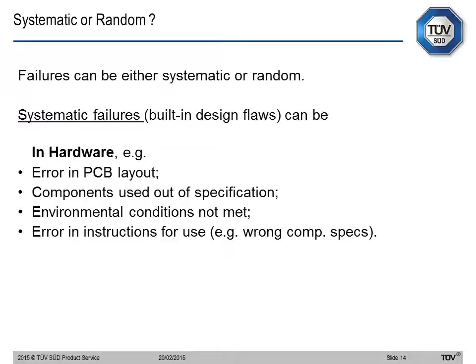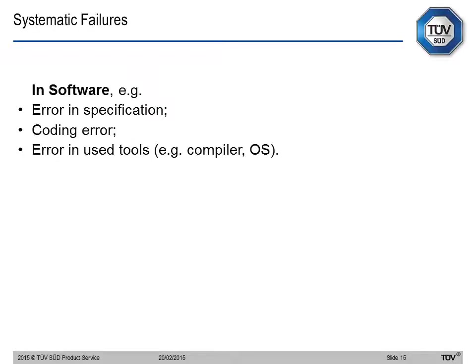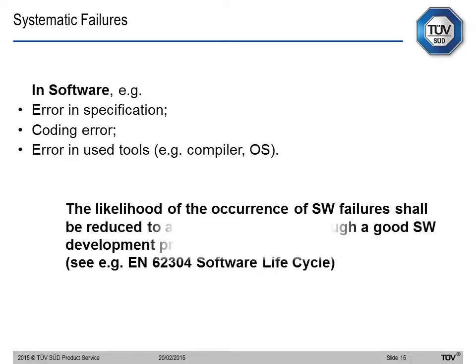There are two types of failures: systematic and random. Systematic failures are built-in design flaws, in either hardware or software. For hardware, an example is an error in PCB layout — we must and can prevent this through a good hardware development process, such as looking at the 60601-1 standard, clause 14, which talks about programmable electrical medical systems. For software, examples include error in specification, code error, or error in the compiler or operating system. The likelihood of software failure shall be reduced to an acceptable level through a good software development process — which is essentially EN62304, the software lifecycle validation standard.